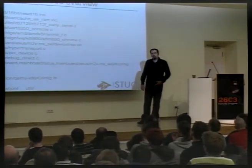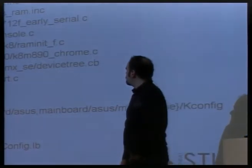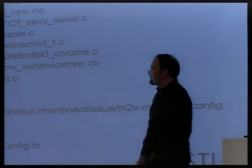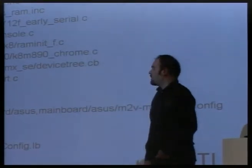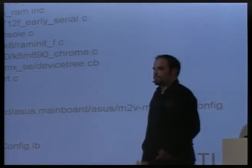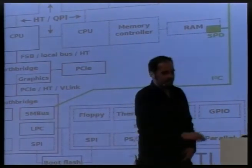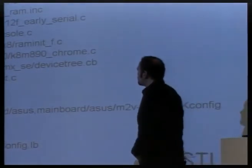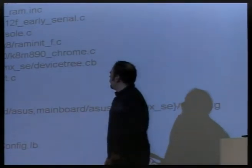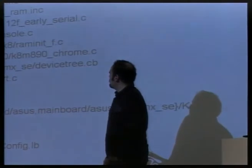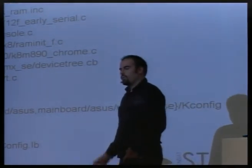Once RAM initialization is set up, there's some stuff that happens in between. Eventually we might end up running this Southbridge VIA K8T890 K8M890 chrome.c file, which is sort of a Coreboot initialization driver for the graphics — the onboard graphics part in this chipset — and we get some graphics output. The order in which this Southbridge Chrome file and other files and also the RAM initialization is executed is controlled by the device tree.cb file for Coreboot, which describes the mainboard, what components are on there, and how they are connected.